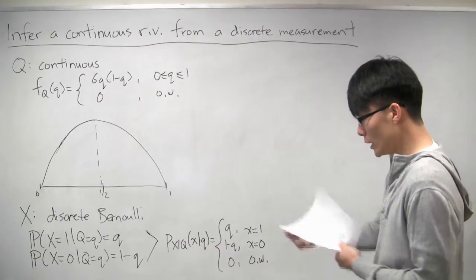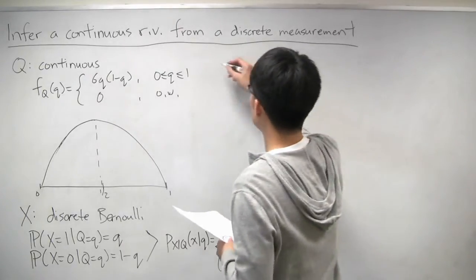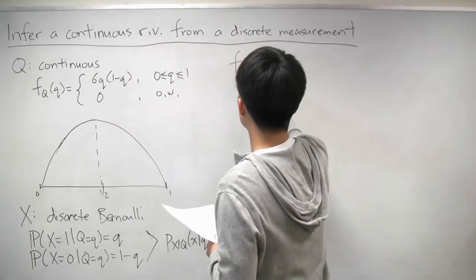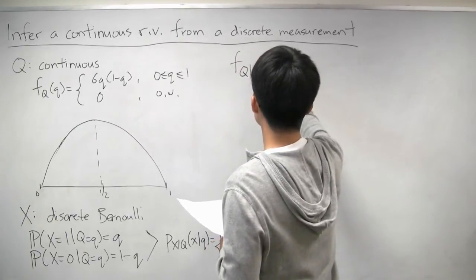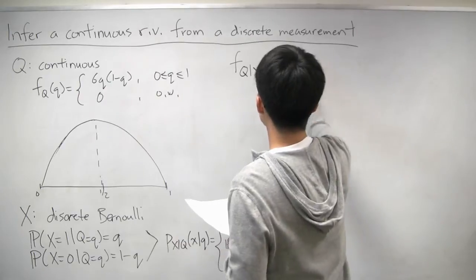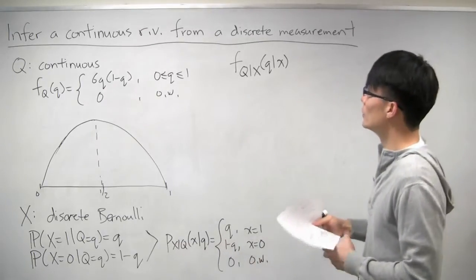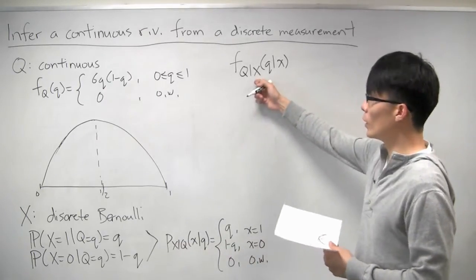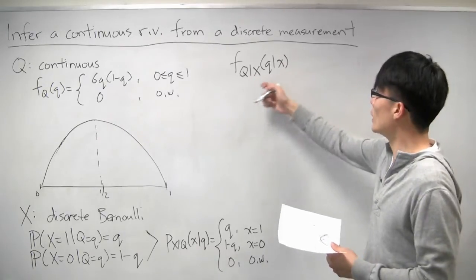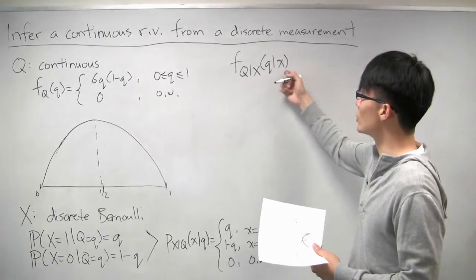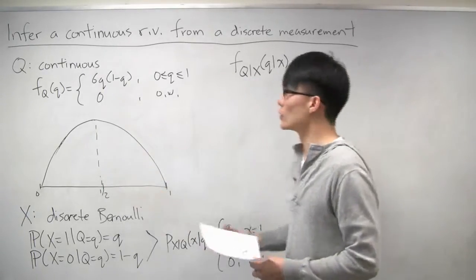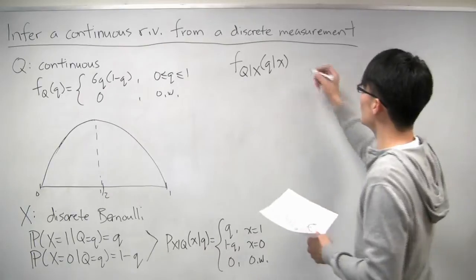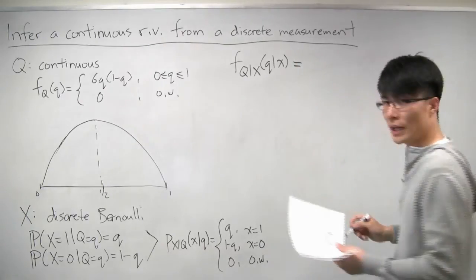So what we want to do in this problem is find this conditional PDF. What is the conditional PDF of q given x? So we observe what x is, either 0 or 1. And we want to know, given that information, given that measurement, what is the new distribution of q, the bias of the coin. And to do that, we apply Bayes' rule.